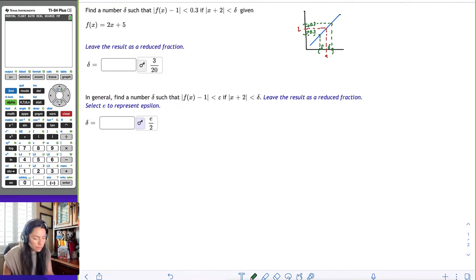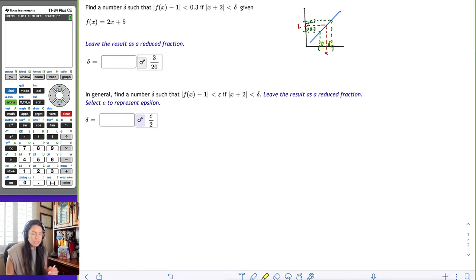What we want to find is this particular delta that would stay within 0.3. So you kind of get like this little window. It's like a little square window. So whatever L is, we want to stay within 0.3 within L, then what would we have to be within A?